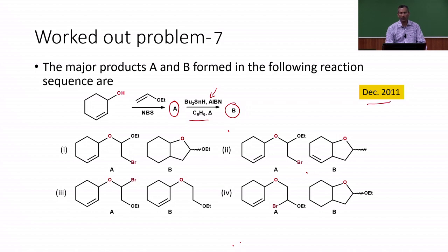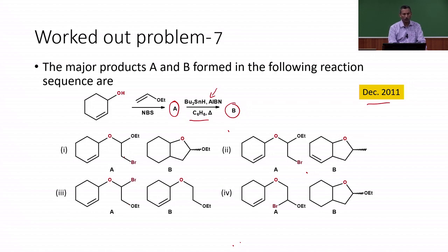This question was asked in December 2011. We have four different combinations of products given. Looking at the first intermediates: the first and second cases both have a bromoacetal, the third also has a bromoacetal, but the position of bromine is shifted. In the last one, bromine is also at a different position. These are all four different first intermediates given.